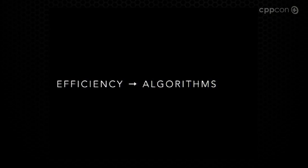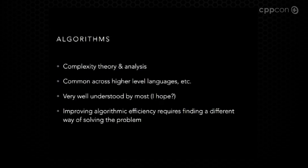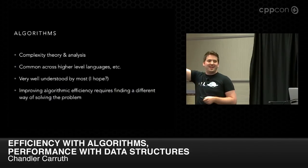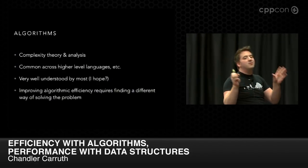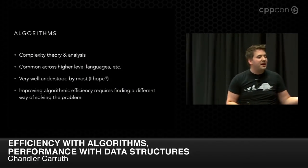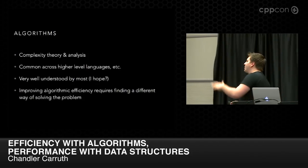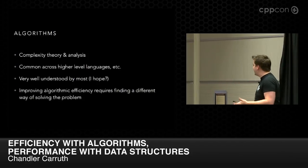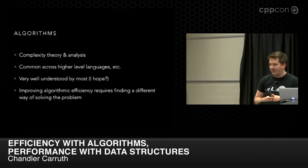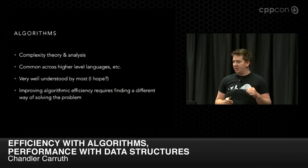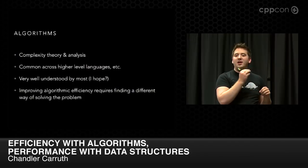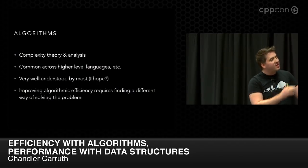Let's talk about how we get better efficiency through algorithms. You guys probably have a good understanding already — algorithmic complexity is a really nice common mathematical concept that carries across all languages regardless of processor or system. These algorithms are easy to experiment with in higher-level languages. I'm hoping you're really good here, but don't get lazy. You have to pay attention to your algorithms. It's incredibly important — more important than everything else I'm going to say.